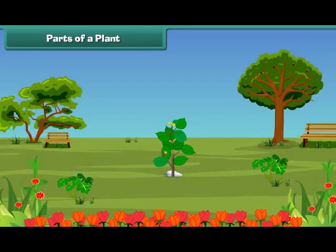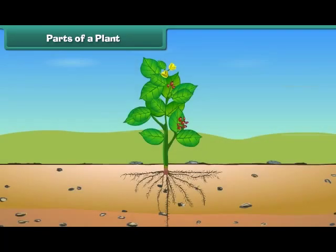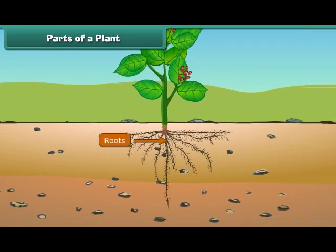Friends, let us discuss various parts of a plant. The main parts of a plant are roots, stem, leaves, flowers, and fruits. Let us know them one by one in more detail. Roots are the lower part of a plant. They grow in soil and help the plants to get water and minerals from the soil.